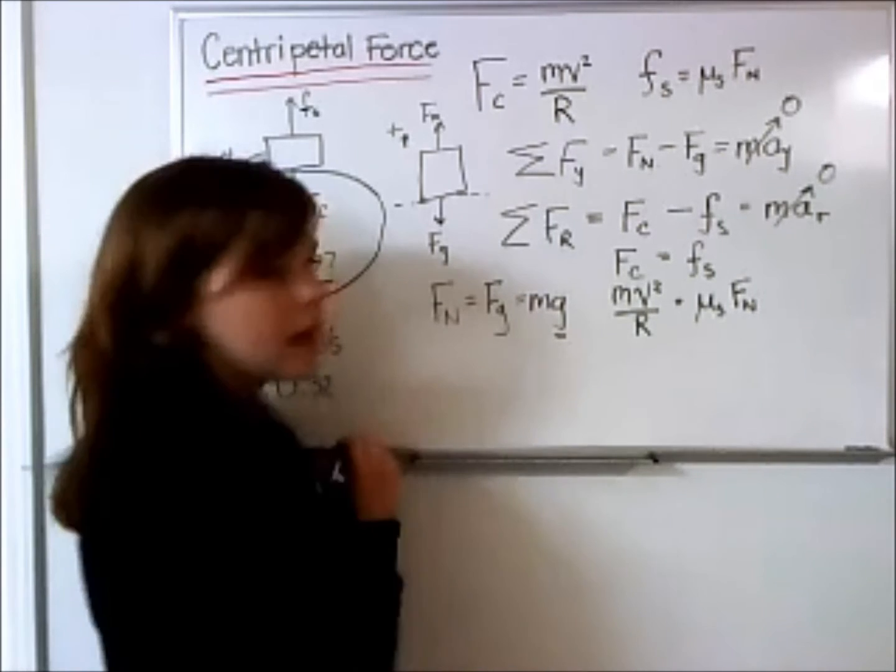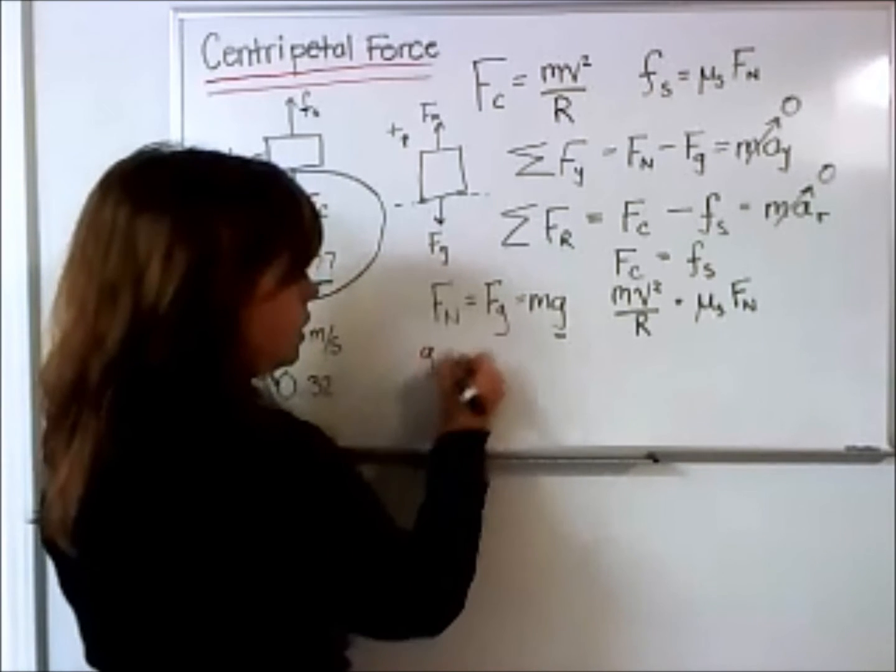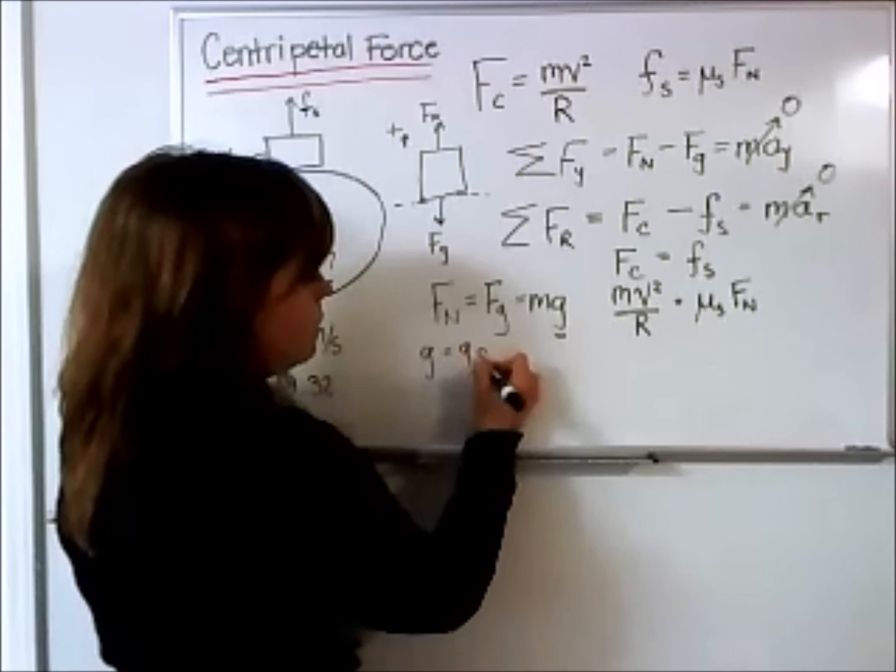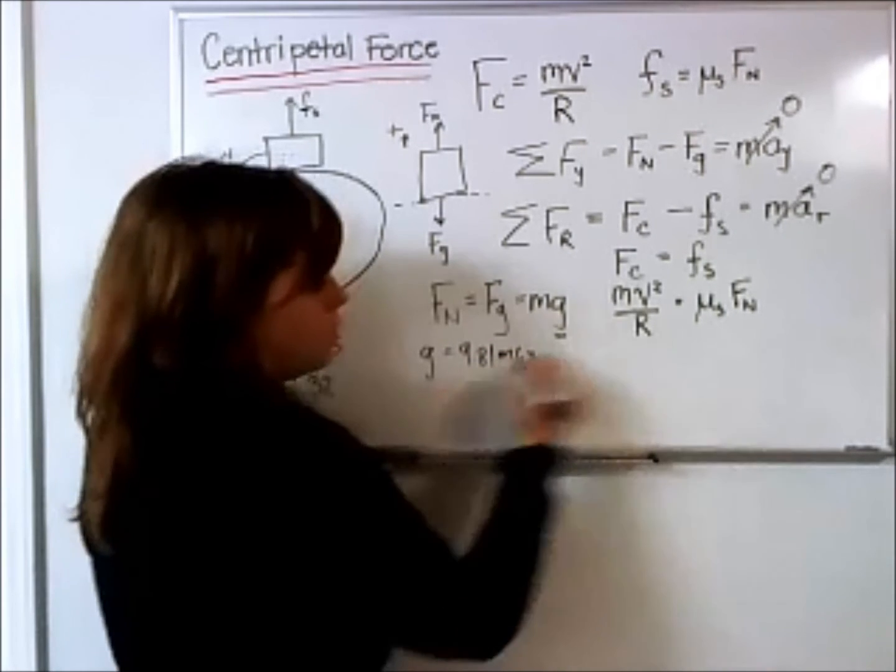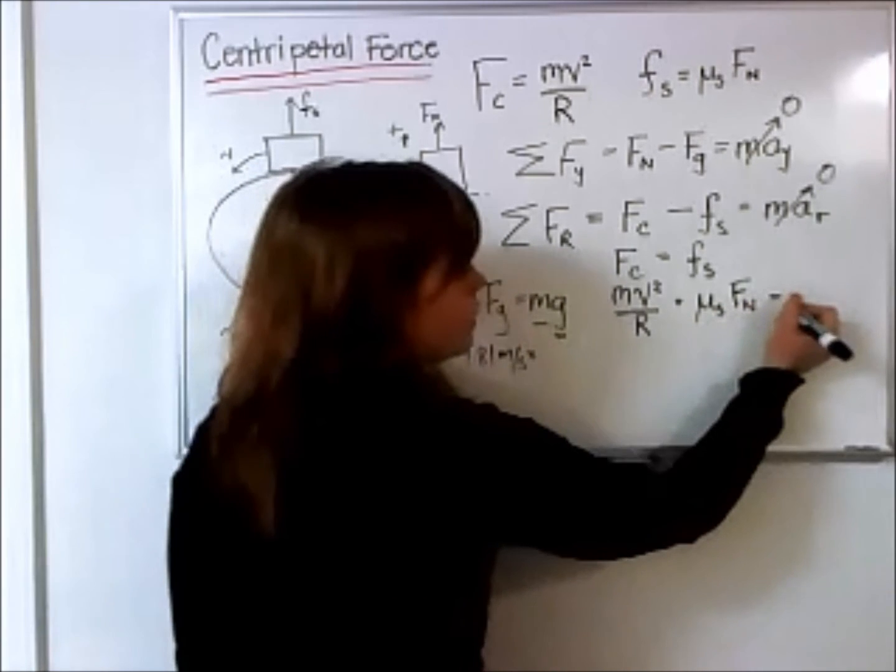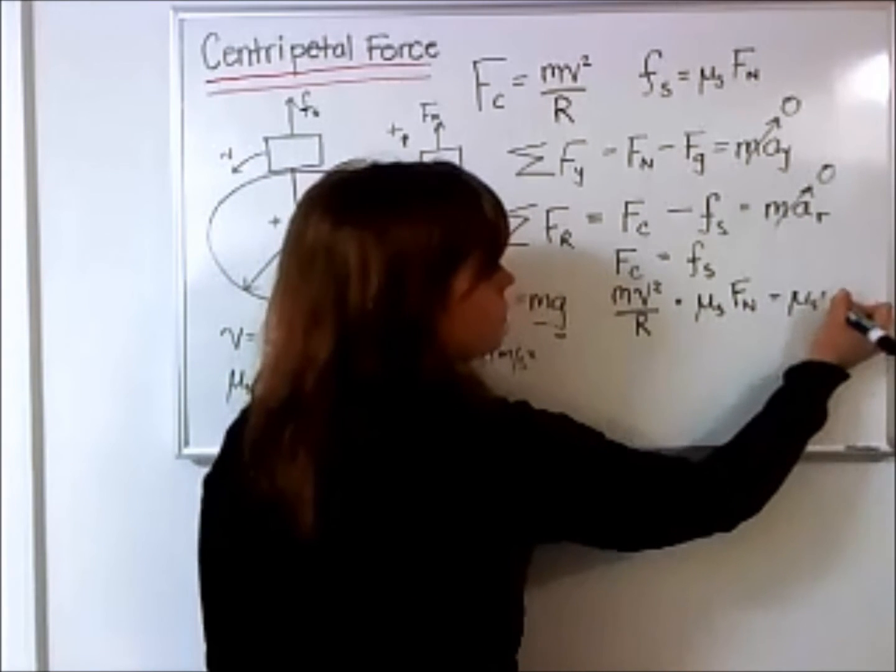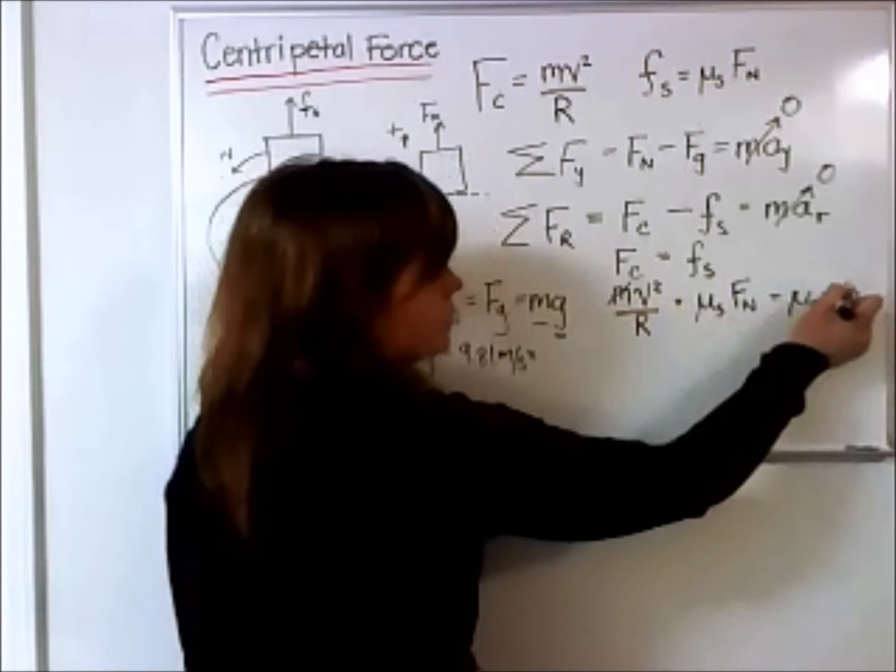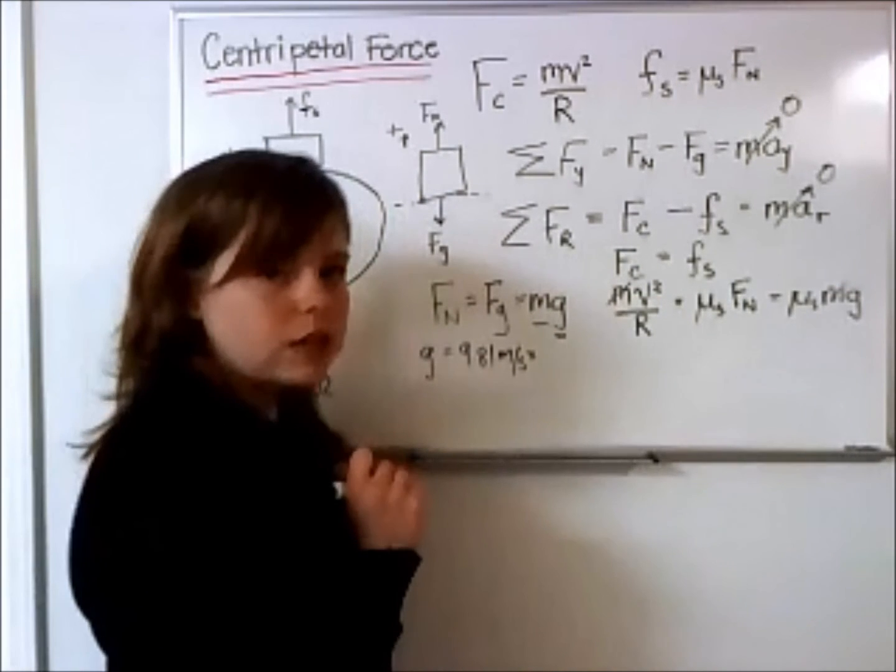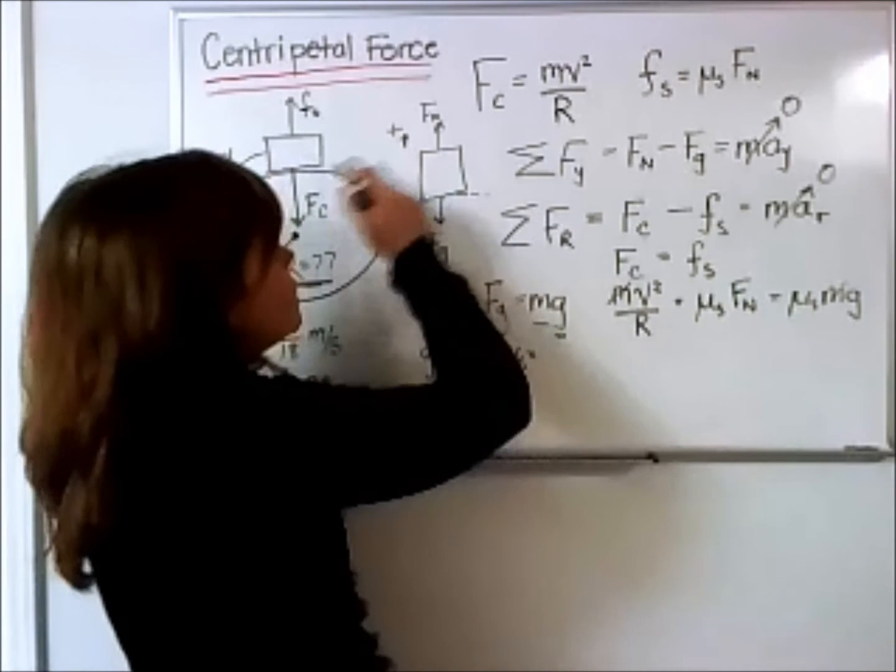This is a constant, G equals 9.81 meters per second squared. So what we can do is we're going to substitute that in for the normal force. And notice how the mass cancels out. So we actually don't even need to know the mass of this car.